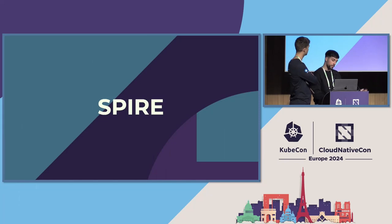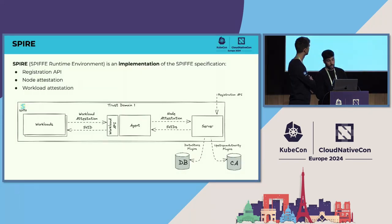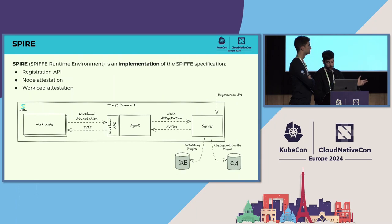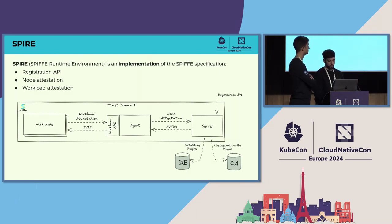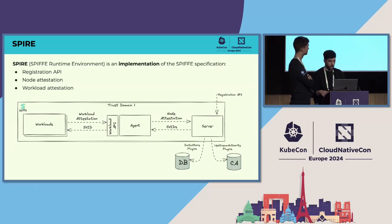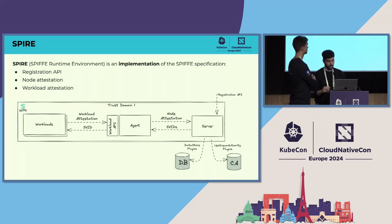SPIRE is one implementation of SPIFFE — there are several others, but here we are reviewing SPIRE. In SPIRE, the architecture is more complex. Instead of having only the Workload API, we now have an agent and a server. The agent will generate the SVID for the workloads in a process known as workload attestation.